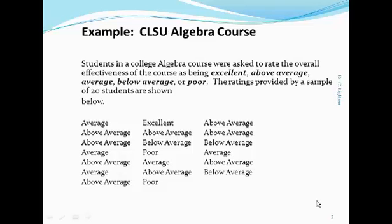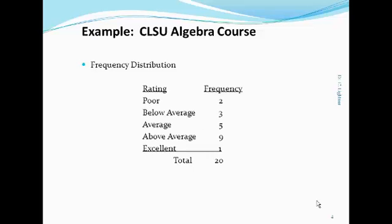Their ratings are provided here in the table. For qualitative data, we define a class as each of the possible response categories. For our example, our classes are poor, below average, average, above average, and excellent.